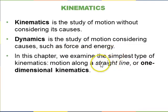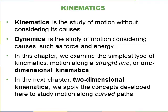So in this chapter, chapter 2, we examine the simplest type of kinematics, motion along a straight line. This is called one-dimensional kinematics. And then in chapter 3, we get into two-dimensional kinematics where the motion can go along curved paths such as a car turning or a projectile curving as it goes through space.